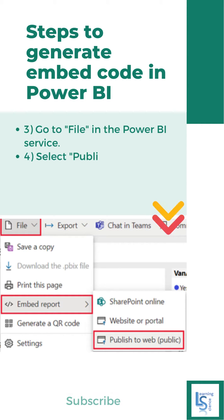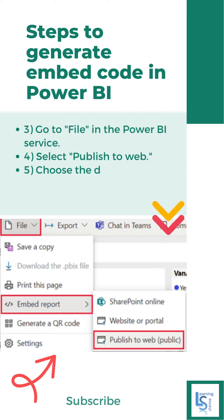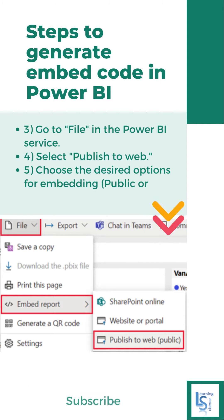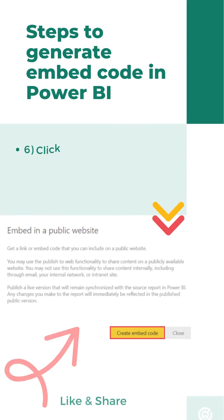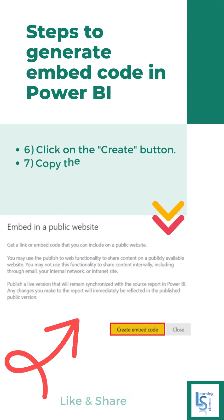Step 4: Select Publish to Web. Step 5: Choose the desired options for embedding — public or secure. See picture. Step 6: Click on the Create button.